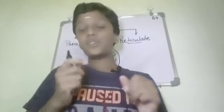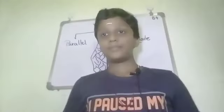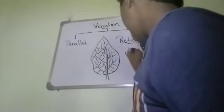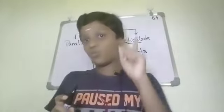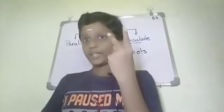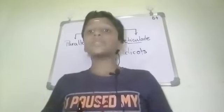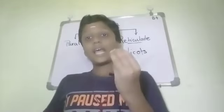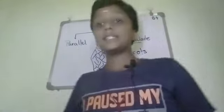Parallel venation is found in monocot plants, and reticulate venation is found in plants called dicots. In monocot plants the seed has one cotyledon, but in dicots there are two cotyledons. There are also other differences: in dicots they have a tap root system, while in monocots they have a fibrous root system. So reticulate venation is found in dicot plants, while parallel venation is found in monocot plants.